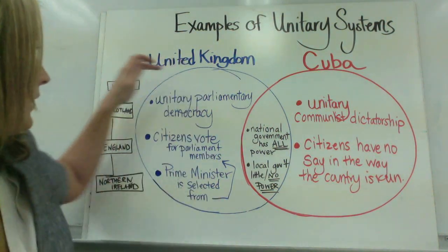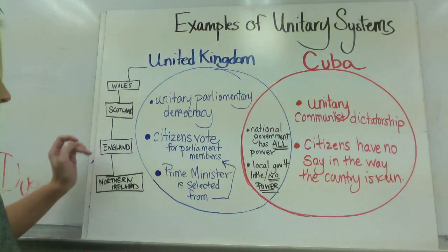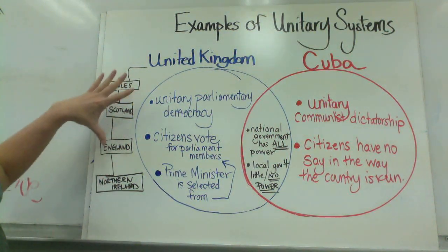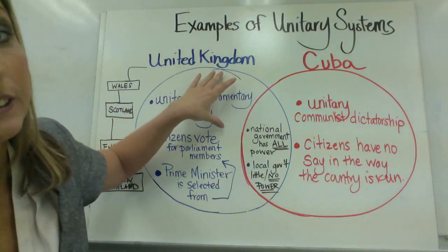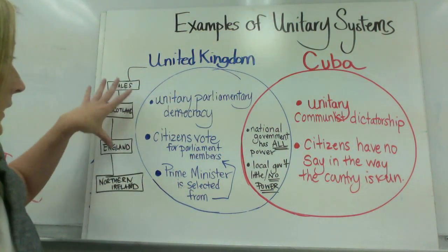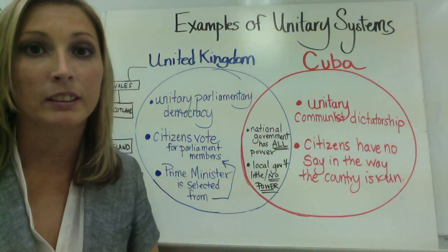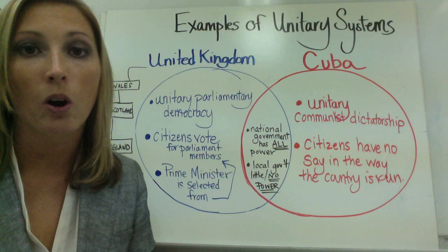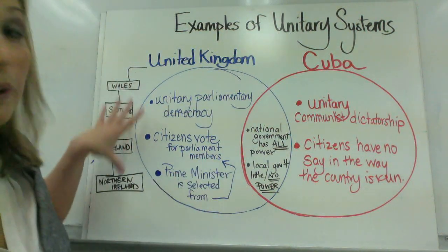The United Kingdom is made up of Wales, Scotland, England, and Northern Ireland, and all of these countries fall under a unitary system. They have a parliament that meets in London, where they discuss policies and laws that are distributed throughout all of these regional areas.